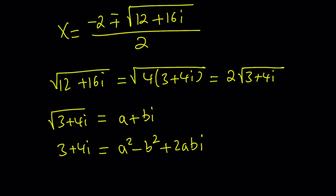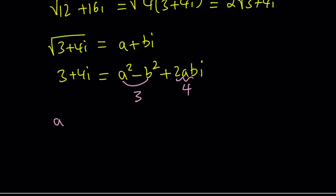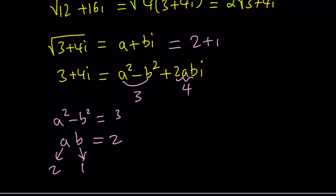We set real parts equal to real parts and imaginary parts equal to imaginary parts. So a squared minus b squared equals 3, and 2ab equals 4, meaning ab equals 2. We need two numbers whose product is 2 and whose difference of squares is 3. Those numbers are 2 and 1 — and of course negative 2 and negative 1 also work. So the square root of 3 plus 4i is 2 plus i.